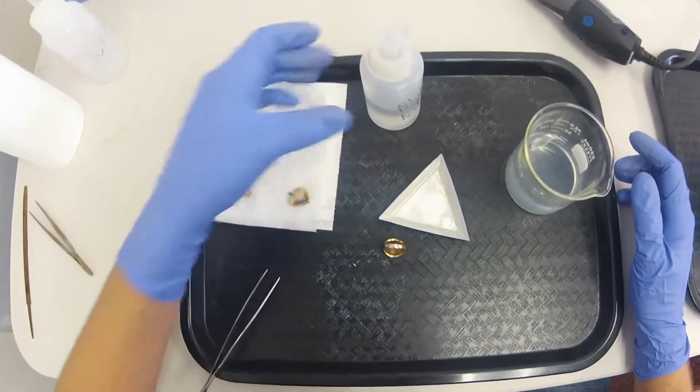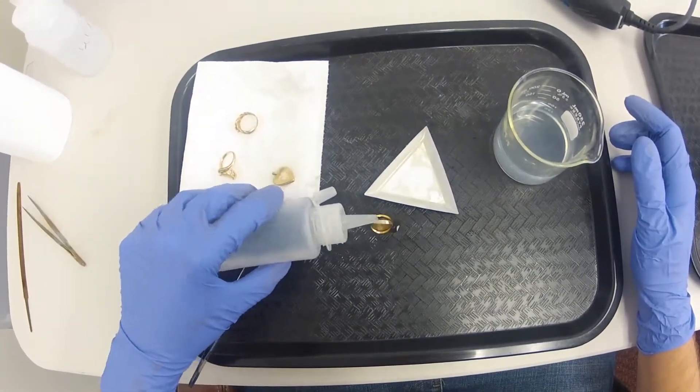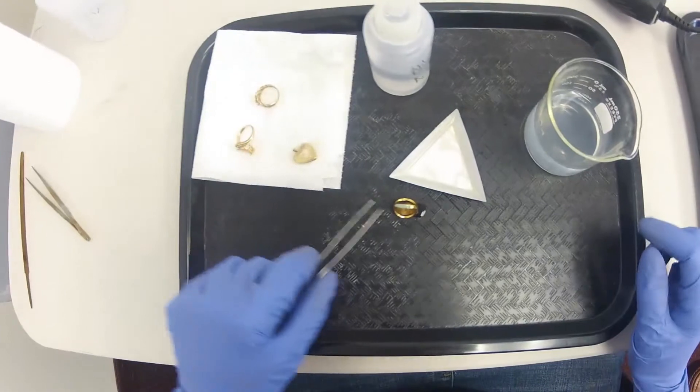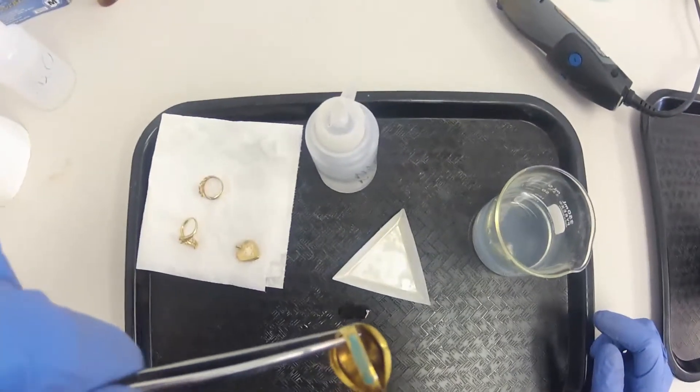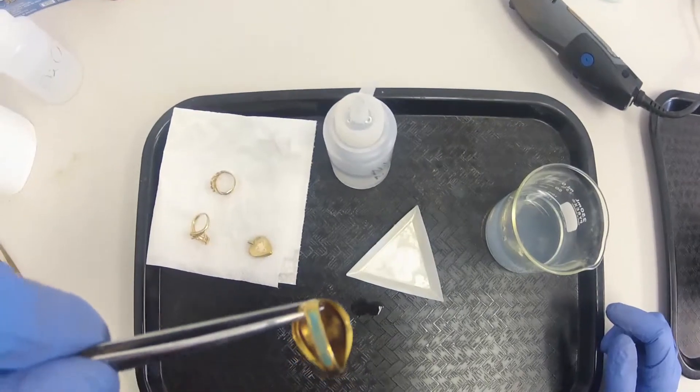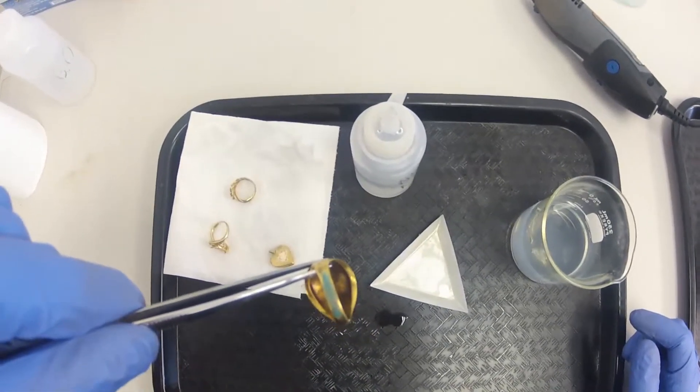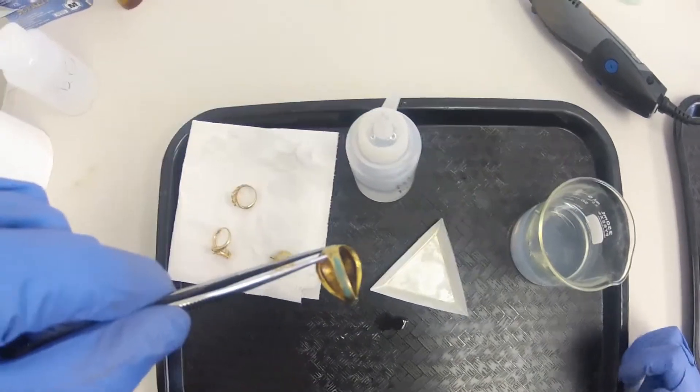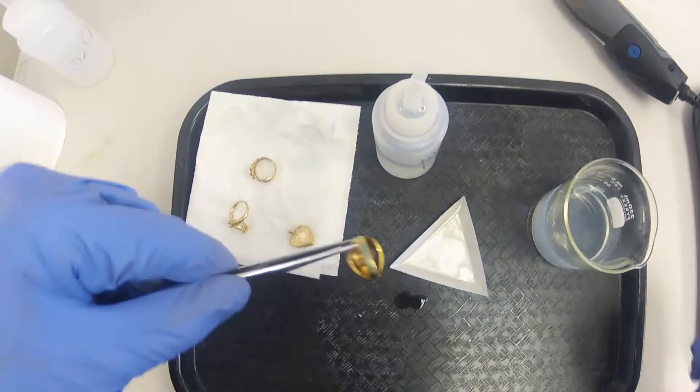So we'll take our piece here, put a little drop of acid on there. As you can see, it's foaming up really green right there, and that's because the copper is reacting with the nitric acid. The nitric is eating away the copper, and that's what that green color is there, that's copper.